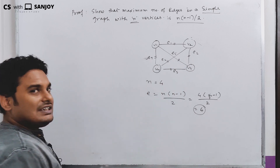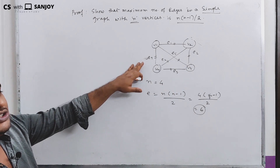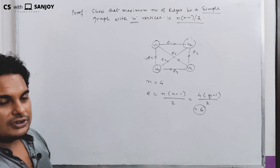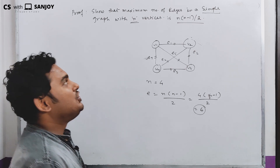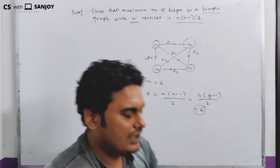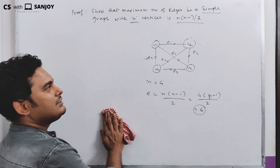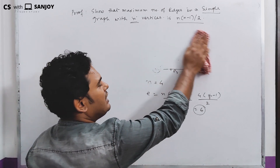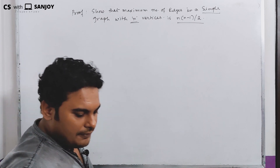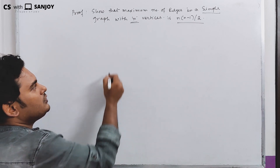So there are six edges total. This is how we verify it. The theorem states: a graph with n vertices has a maximum of n(n-1)/2 number of edges. So we have to prove it.